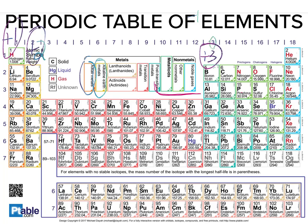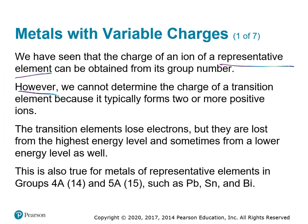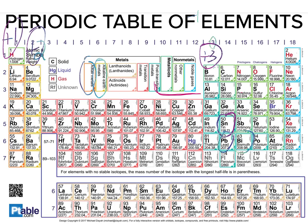However, we cannot determine the charge of a transition element because it typically forms 2 or more positive ions. The transition elements lose electrons from the highest energy level and sometimes from a lower energy level as well. This is also true for metals of representative elements in groups 4A and 5A, like lead, tin, and bismuth. The transition metals are these B-group elements, and lead, tin, and bismuth are right here.